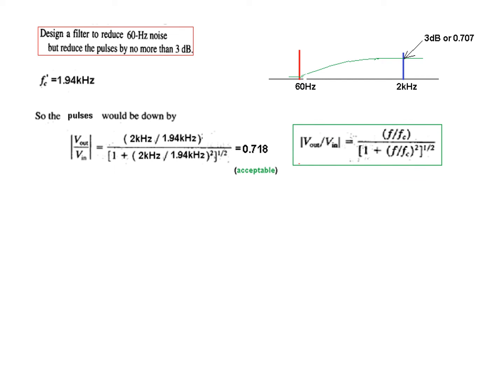Now what will be its effect? Now the fc prime has moved slightly here, so what will be its effect now on the signal? The pulses would be down by... now again we are using this formula to find Vout/Vin. So from here if you calculate, it will be 0.718, which is acceptable because the question has said that you cannot go beyond 3 dB, that means beyond 0.707. In our case it is remaining at 0.718. Therefore, this value is acceptable, this design is acceptable.